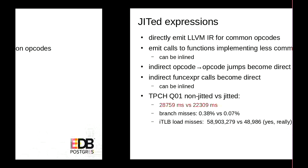Doing this gets us quite a performance win. I measured most of it using TPC-H Q1. If we enable JIT just for expression evaluation, the query execution time on a scale-100 database goes from 28 seconds to 22 seconds. We reduce branch misses quite a bit. But the really big difference is that ITLB load misses — basically fetching the code to execute the next expression — go from 58 million to 48,000. That's about three orders of magnitude fewer indirect code loads. I had to measure this five times because I didn't believe the reduction was that large.